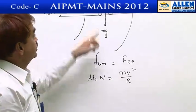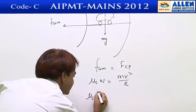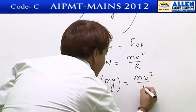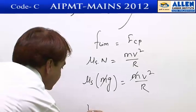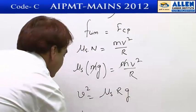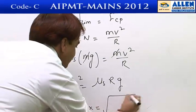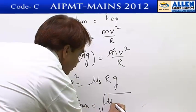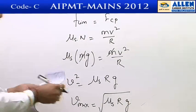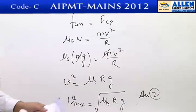The limiting friction force μs·N equals the centripetal force mv²/r, and since normal reaction N equals mg, we get v² equals μs·r·g. Therefore, the maximum safe speed of the vehicle is v = √(μs·r·g). The correct answer is option number 2.